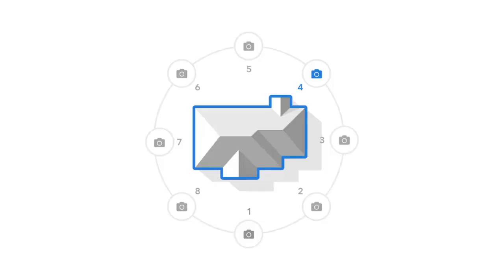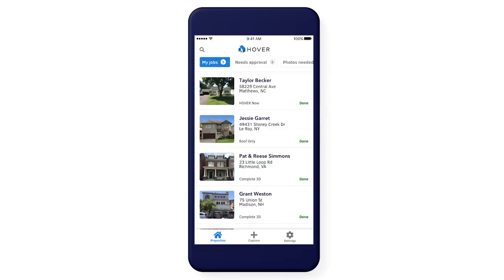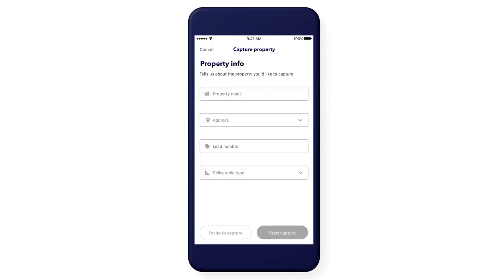The capture flow is a place where we've made some big changes. You can now start at any point on the property, take photos in any order, and add multiple photos of a side. Just tap the plus icon to get started.